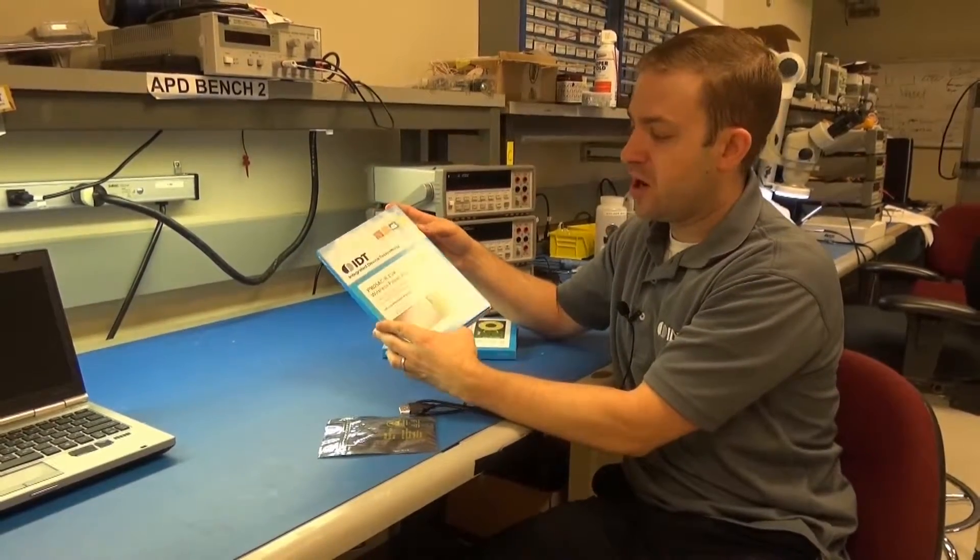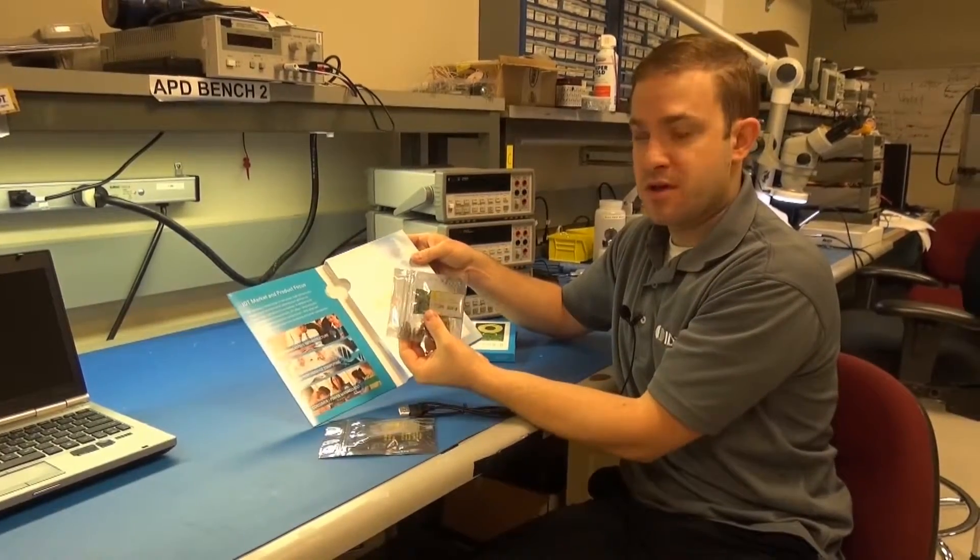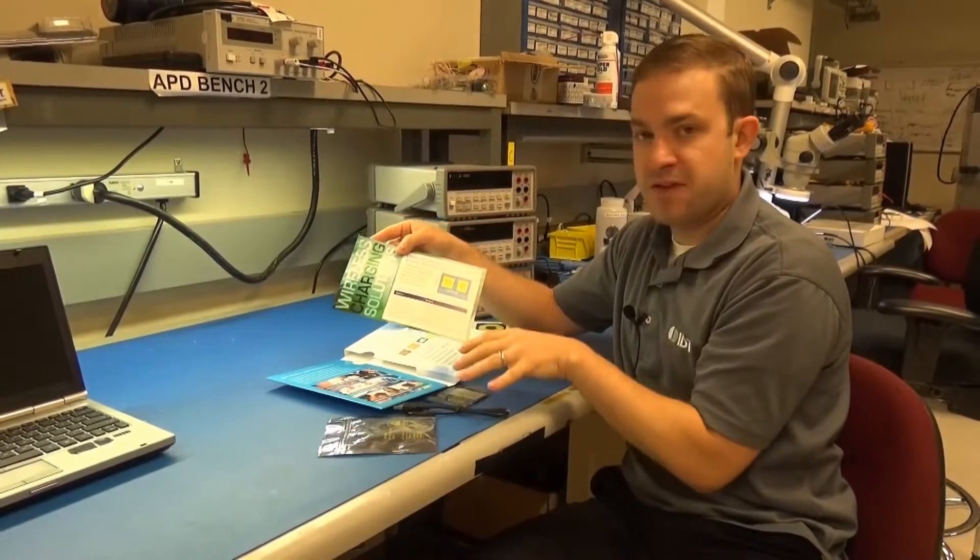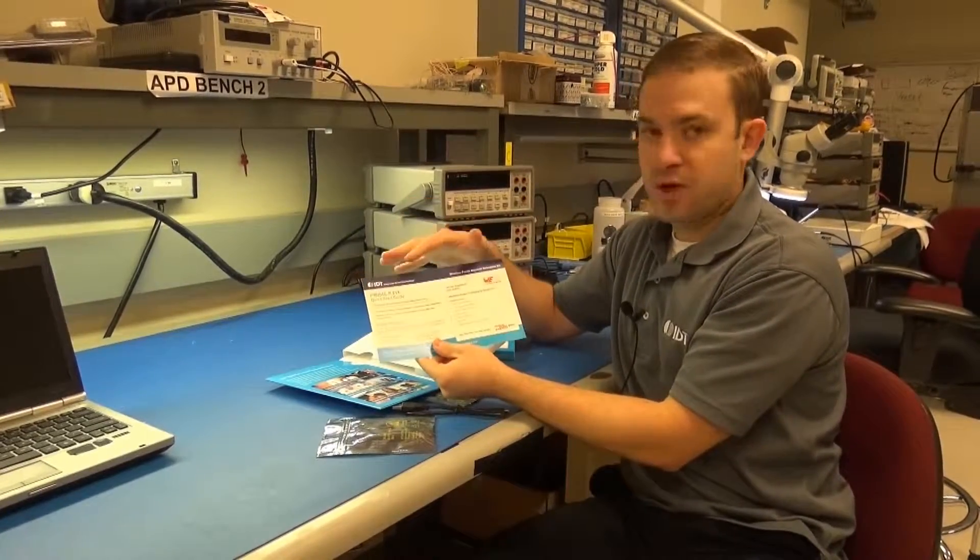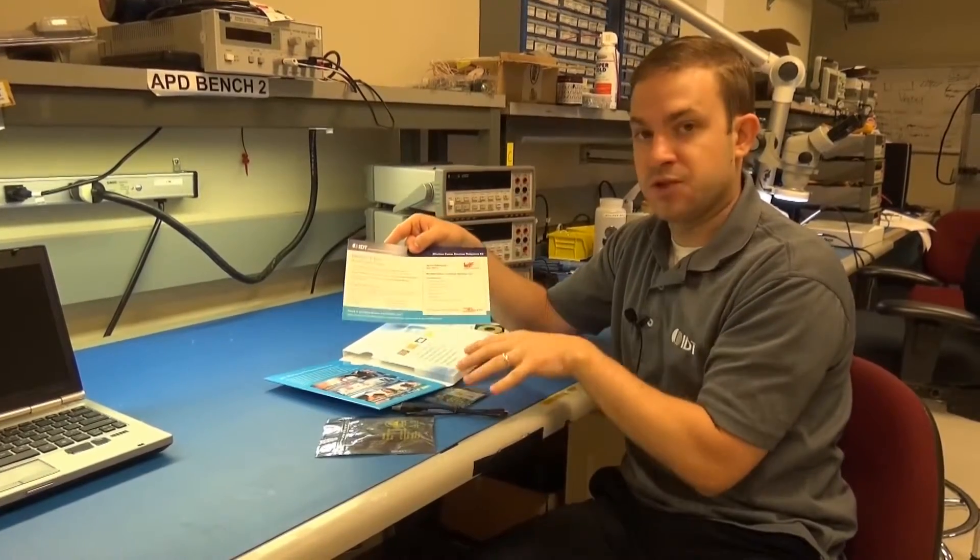Likewise, in the receiver box, you will get the receiver board and an insert with features and benefits of that board, the quick start guide, and then again a link to the digital collateral for the receiver board.